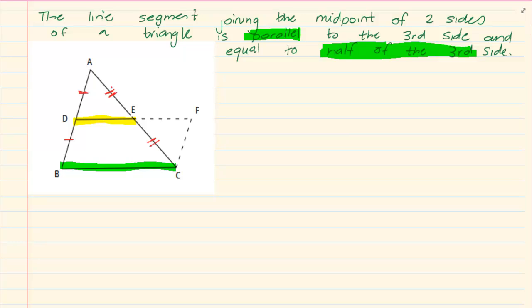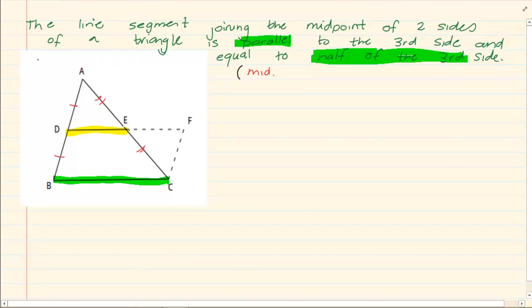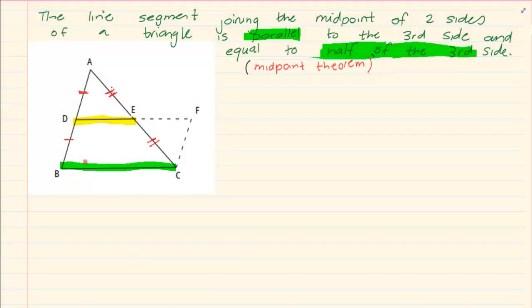Now this is a proof that you need to know. The reason that you would give when you are doing riders is midpoint theorem. How do we go proving this? First of all, we need to say what was given to us.